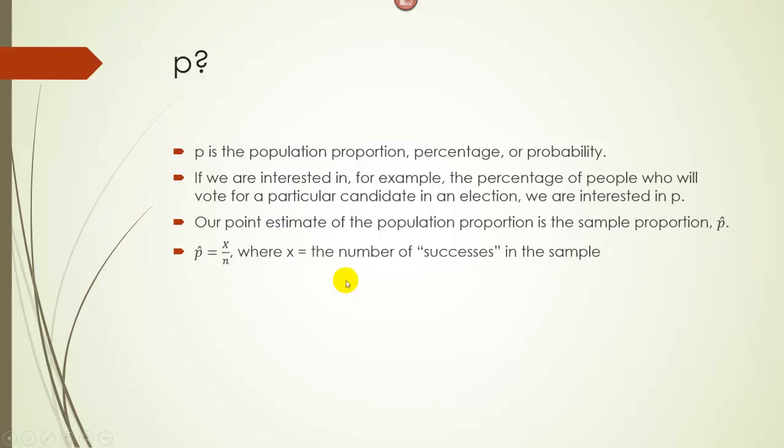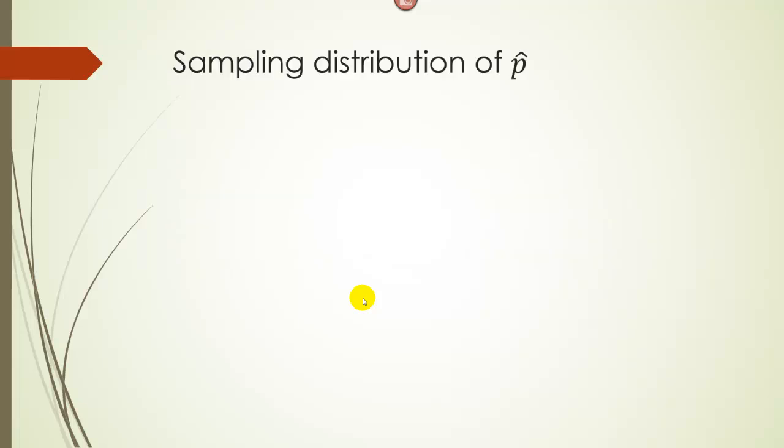P hat is just X over N, where X is the number of successes in our sample, and we define a success as whatever we're interested in finding the proportion of.